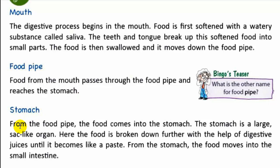Let's see the stomach. From the food pipe, the food comes into the stomach. The stomach is a large, sac-like organ. Here, the food is broken down further with the help of digestive juices until it becomes like a paste. From the stomach, the food moves into the small intestine.